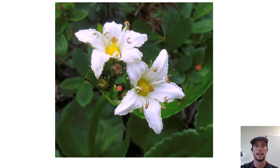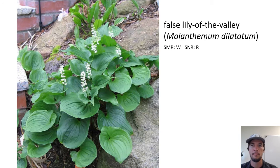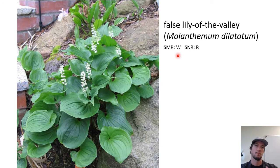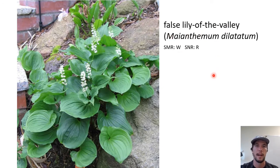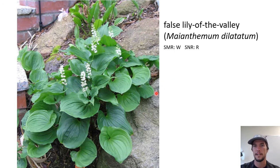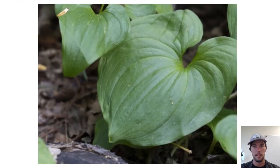Next up: false lily of the valley, Maianthemum dilatatum. Another plant that loves wet, rich areas. You find this one in a lot of similar places as skunk cabbage, although it tends to like slightly drier spots. Imagine you're going along the forest and there's a big depression where water collects — you might find skunk cabbage in there, and false lily of the valley in the areas just around it. This plant tends to form big mats; it's really low to the ground, just looking like a bunch of little leaves, and it spreads by rhizomes underground. It's a really common ground cover plant around Vancouver.